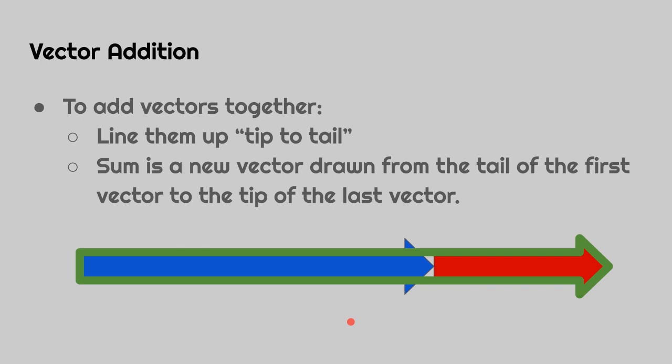We can add vectors together. Line them up tip to tail. The sum of the new vector is from the last one, so here is my new vector would be something this large. This is adding the vectors.